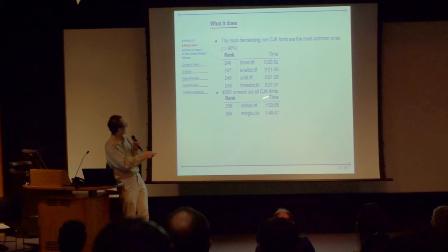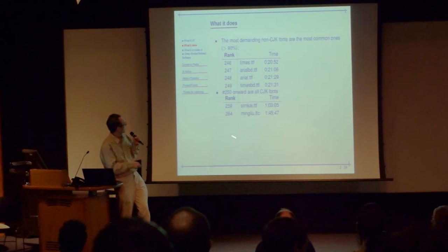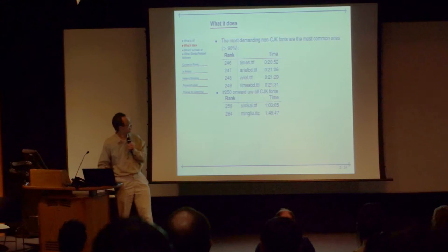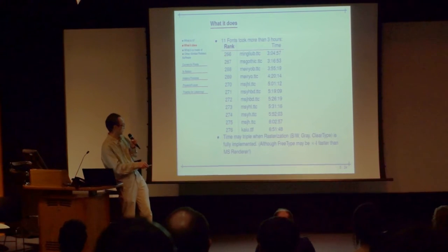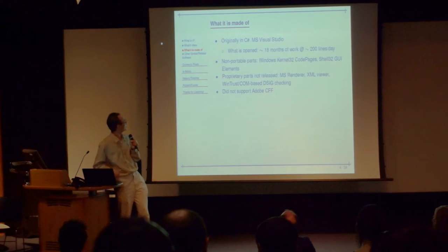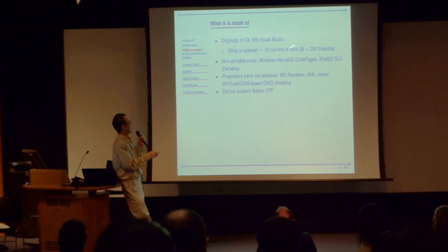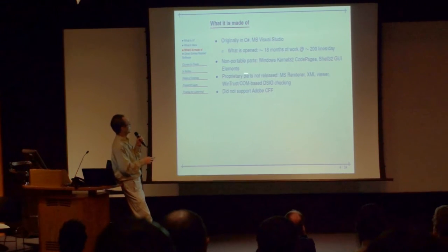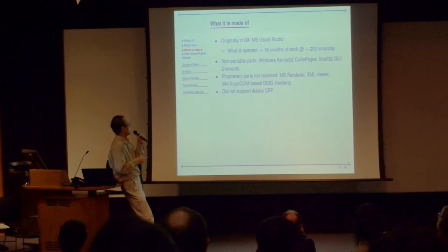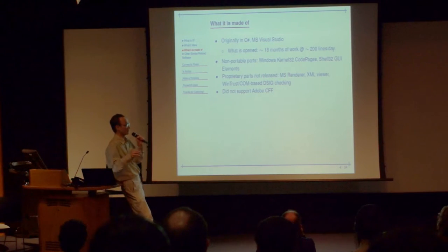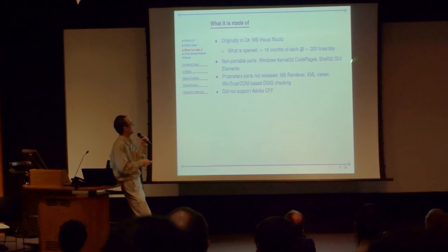This analysis takes some time. Most fonts finish within 20 minutes, but the most difficult are CJK fonts, which go up to seven hours. It might increase further if we test black-and-white rendering, greyscale, two-work rendering, and pixel rendering. It is originally written in C Sharp and developed on Visual Studio. What was opened is about 18 months of work at 2,200 lines per day — that's my estimate of how much work they gave to the open source world. There are a couple of non-portable parts because it uses the OS file dialog rather than a platform-independent implementation, so those needed to be rewritten.